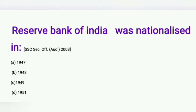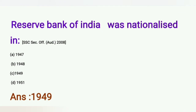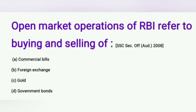Question: The Reserve Bank of India was nationalized in — A) 1947, B) 1948, C) 1949, D) 1951. Question: Open market operations of RBI refers to the buying and selling of — A) commercial bills, B) foreign exchange, C) gold, D) government bonds.